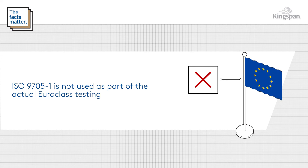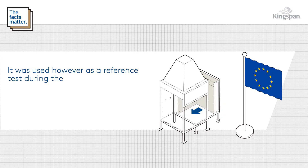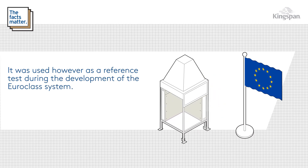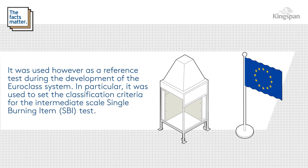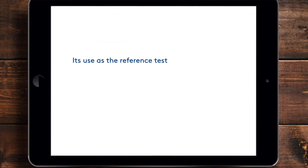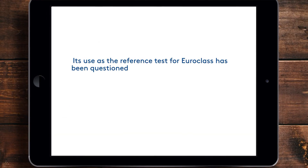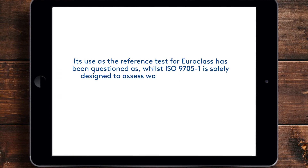ISO 9705 Part 1 is not used as part of the actual Euro Class testing process. It was used, however, as a reference test during the development of the Euro Class system. In particular, it was used to set the classification criteria for the intermediate scale single burning item test.